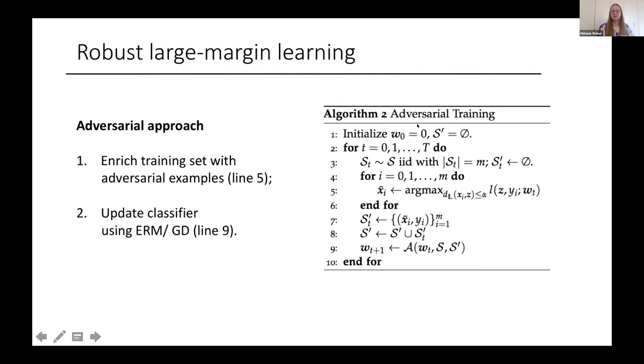So in each step of the algorithm, we take a subset of the training data set and then compute adversarial examples for each of those points in the subsample. If we don't find an adversarial example within the budget, we just move on. But most of the time we will find an adversarial example, then we add those to the training data set and update our classifier over the enriched training data set.